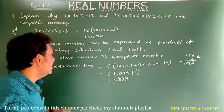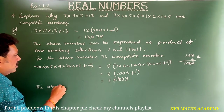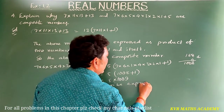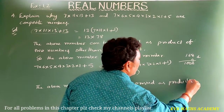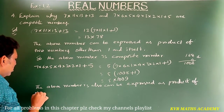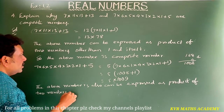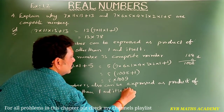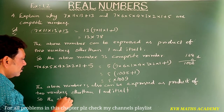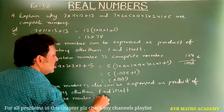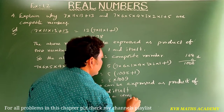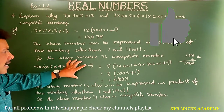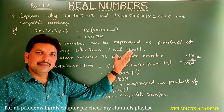Therefore, the above number is also a composite number, as it can be expressed as a product of two numbers other than 1 and itself. This is a two-marks problem — if you write it like this, you will get full marks. Please note it down.